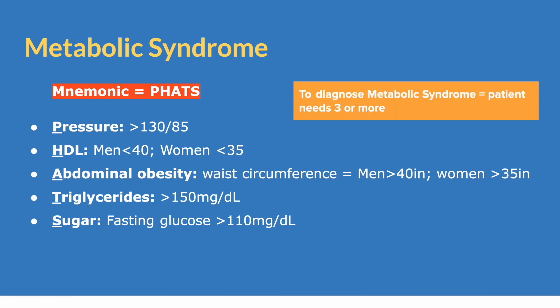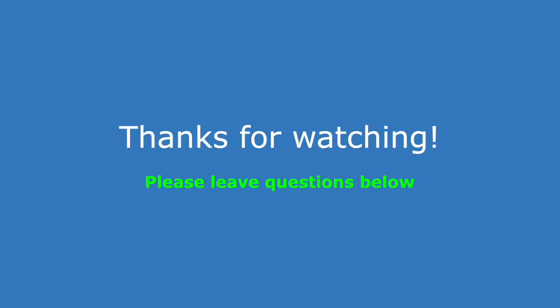To diagnose metabolic syndrome, a patient needs three or more of the following criteria. So as long as they're matching three or more, they can be diagnosed with metabolic syndrome. Hopefully this video was helpful for explaining the criteria for metabolic syndrome. Please leave any questions below. Thanks for watching.